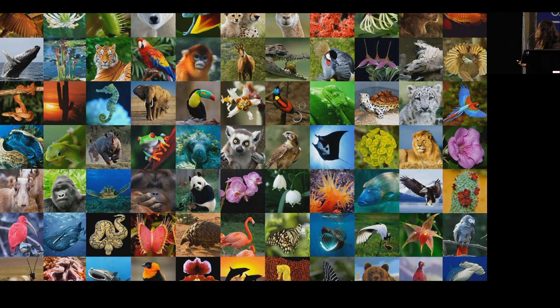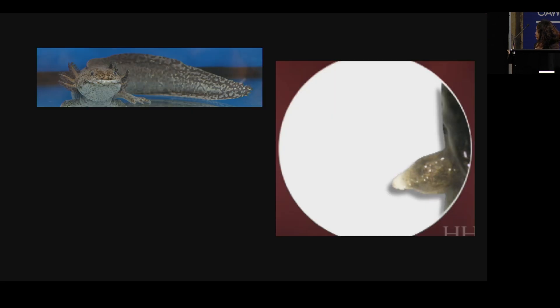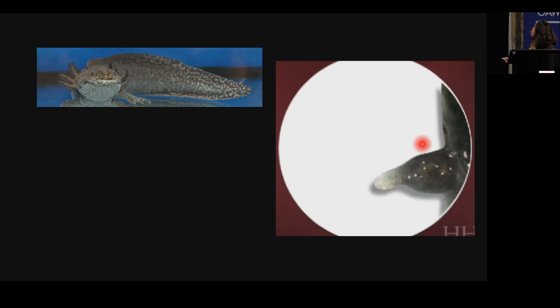Thank you for inviting me to speak at this super interesting conference. I will talk about a natural way in which we can address the problem of an amputated limb. In nature, animals have all sorts of different forms, and there are plenty of animals that can do things we're not able to do. One of the most striking, relevant for today, is the animal I work on: the salamander — Ambystoma mexicanum. This is a time-lapse movie of a salamander where the limb has been amputated, and over the course of a number of weeks, it's growing back.